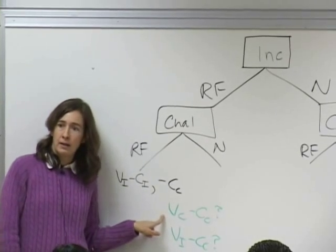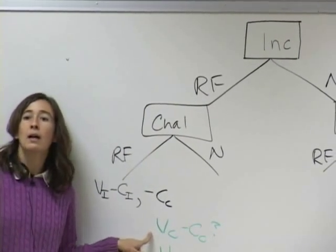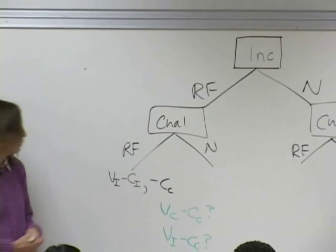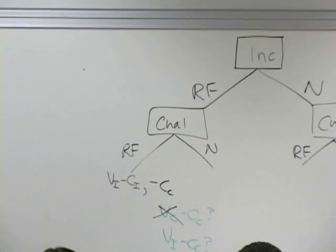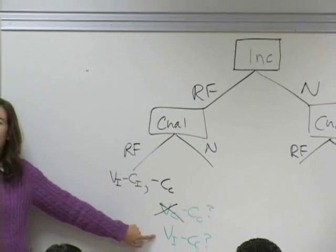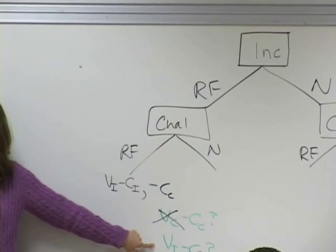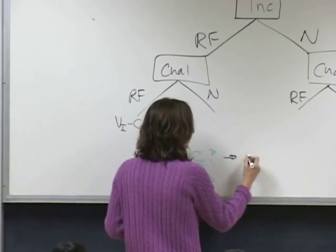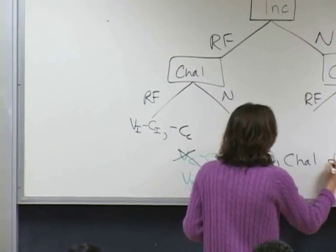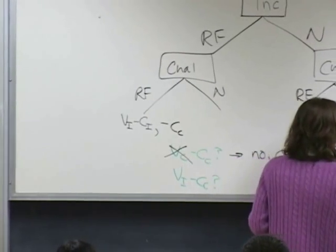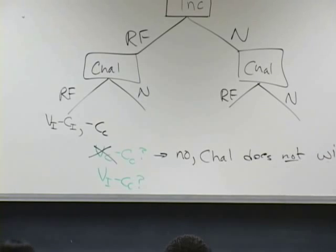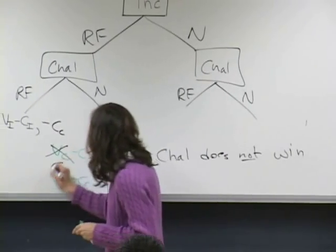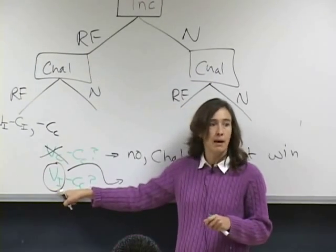The challenger doesn't win here, so she doesn't get VC. Challenger only gets the positive VC when she wins—no VC for the challenger this time. As for VI minus CC, the challenger doesn't care about the incumbent's utility. The challenger is never going to get V sub I. VI only goes to the incumbent. The aspects of the payoffs here only belong to one player.